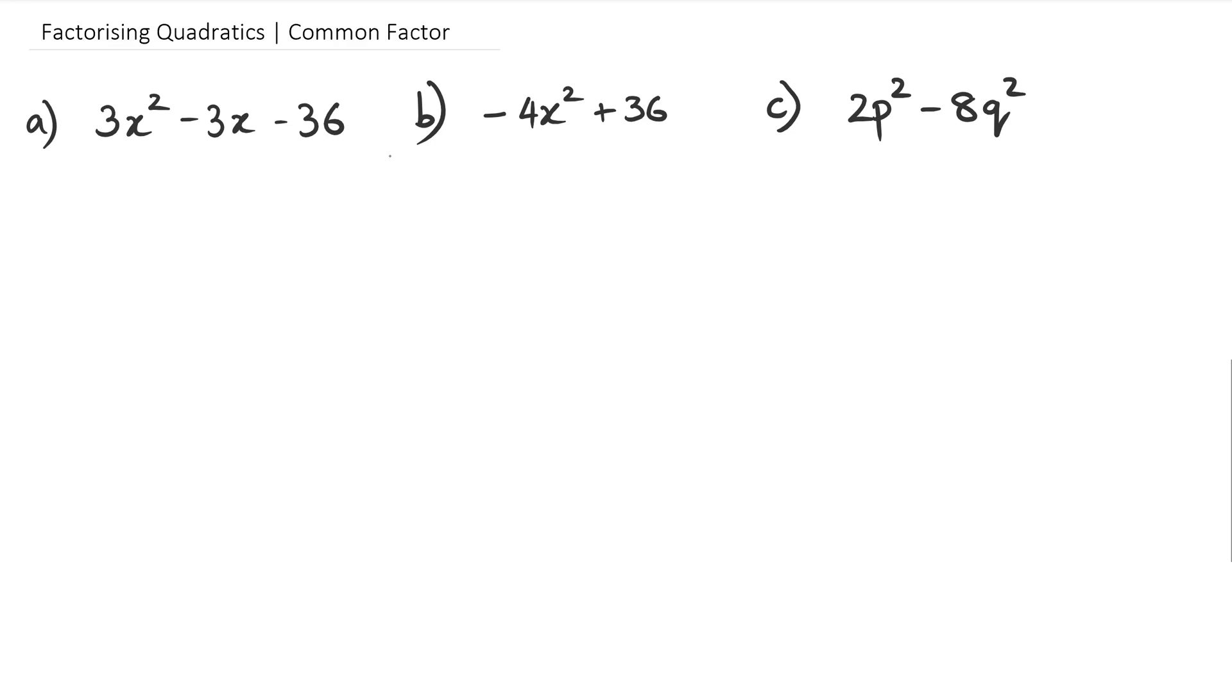So take for example question A here. You can see straight away that 3 is a common factor. So what you could do is you can take 3 out as a common factor. And when you do that, you're going to get 3 bracket x squared minus x minus 12.